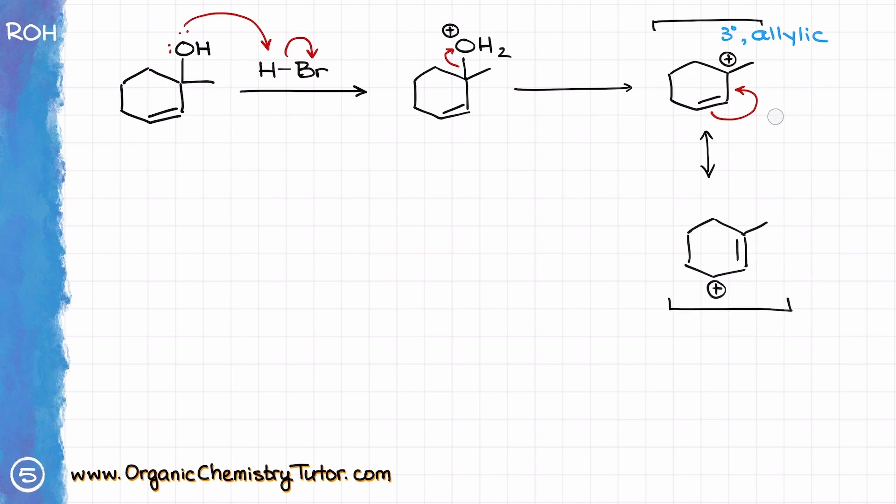Now, I'm going to get rid of my curved arrow that I used for the resonance, because I don't really need that anymore, but from this point, I have two electrophilic positions in my molecule. I have this electrophilic position, and I have that electrophilic position. So, my Br- that I have formed on the first step can potentially attack either of those. So, I'm going to show that Br- is going to be attacking either over here, or I can say that my Br- is going to be attacking right down there.